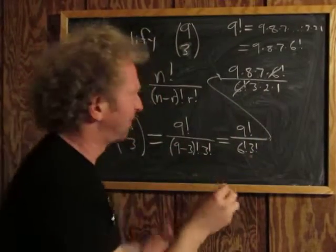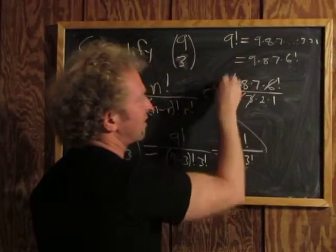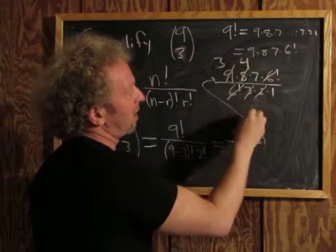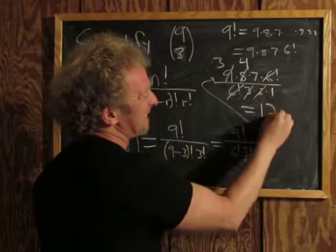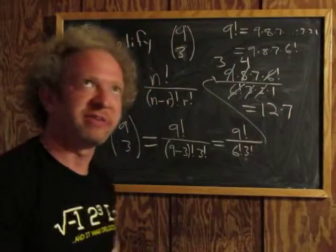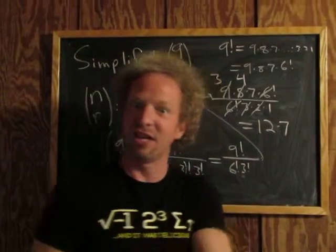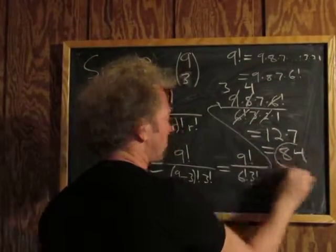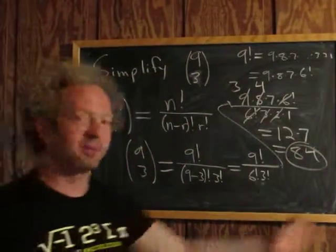Let's simplify further. 3 goes into 9 three times, 2 goes into 8 four times. So we get 3 times 4 times 7, which is 12 times 7. 7 times 10 is 70, 7 times 2 is 14, so this is 84. Therefore, 9 choose 3 equals 84. That's it.